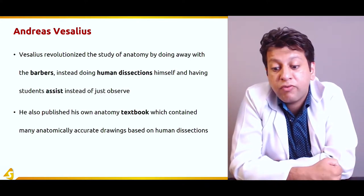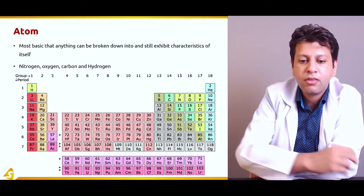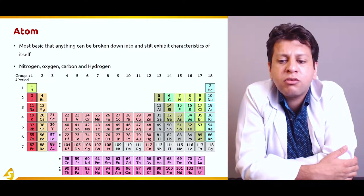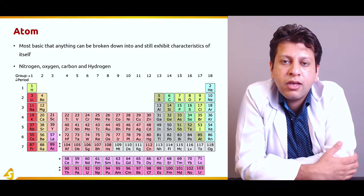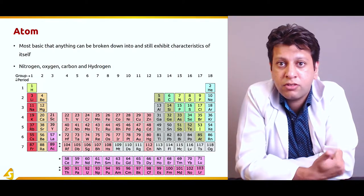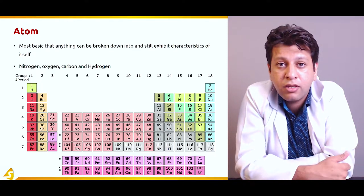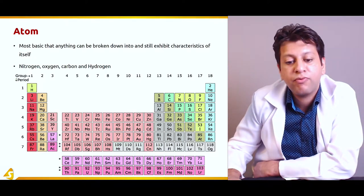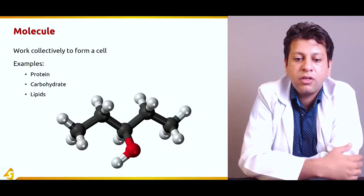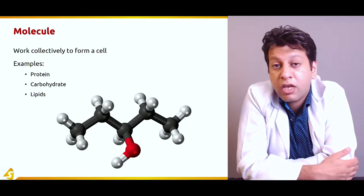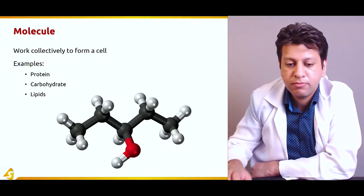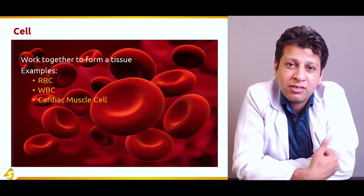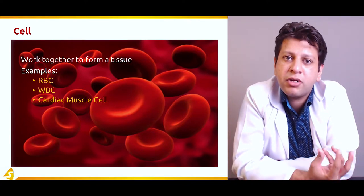He also published an anatomy textbook with many anatomically accurate drawings based on human dissection. Moving to structural organization: the most basic unit that can be broken down and still exhibit its own characteristics is an atom. We are made up of many atoms — hydrogen, oxygen, carbon, nitrogen — and they make different atoms. When atoms combine, they form molecules; examples include proteins, carbohydrates, and lipids. When molecules assemble into larger structures, this forms a cell — which contains cytoplasm with different molecules suspended in liquid. Examples of cells are red blood cells, white blood cells, and a single cardiac muscle cell.